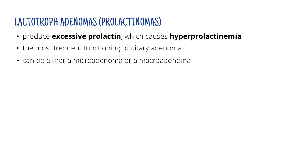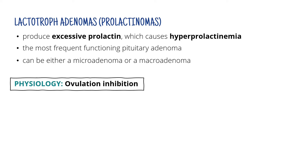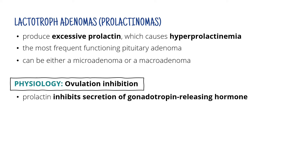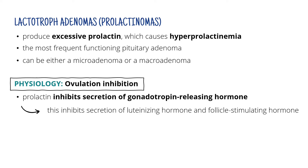Prolactinomas produce excessive amounts of prolactin, which cause hyperprolactinemia — a condition when there's too much prolactin in the body. Prolactinomas are the most frequent type of functioning pituitary adenoma. What we know is that prolactin inhibits ovulation after childbirth by inhibiting secretion of gonadotropin-releasing hormone, which regulates luteinizing and follicle stimulating hormone. So when there's no gonadotropin-releasing hormone, there's also no LH or FSH, and new oocytes cannot develop. Physiologically, this inhibition lasts until a few weeks after the end of nursing, but in this case we have high levels of prolactin all the time, not just after childbirth.